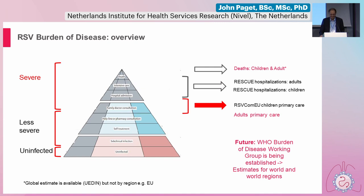In terms of next steps: we've done the work for hospitalizations in adults and children, and we're now extending the analysis to primary care, as shown with the COMNET study. We need to focus on adults and the elderly in primary care, and also on deaths and mortality — something to work on in the coming years. It's good to know there is a WHO burden of disease working group, with one for flu and one planned for RSV, which should help improve burden of disease estimates.